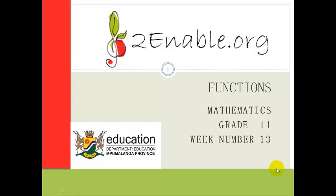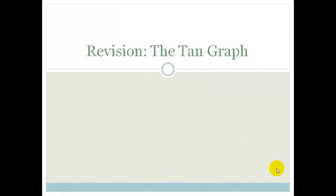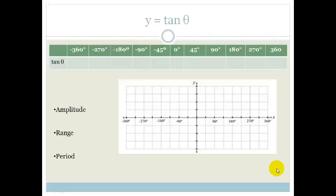Good day, grade 11s. Welcome to this last lesson of week 13. In this lesson, we're going to revise the tan graph, and we're going to use exactly the same method that will be used for the sine and cos. So let's start by just plotting some points, but notice again that this time we're going from minus 360 degrees to 360 degrees.